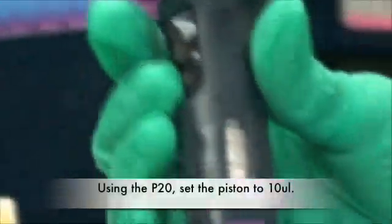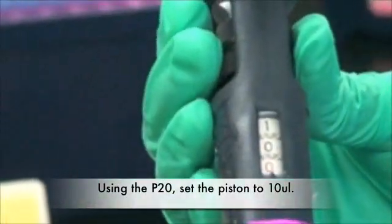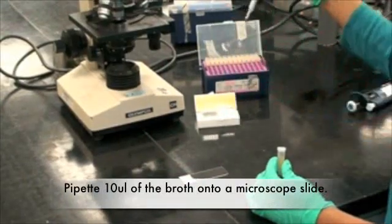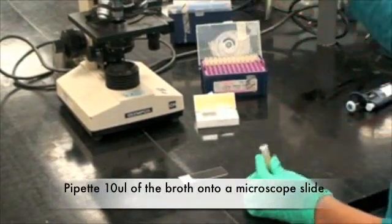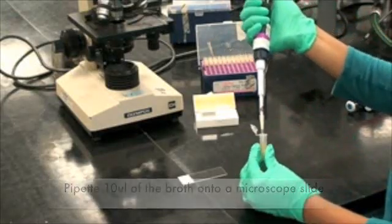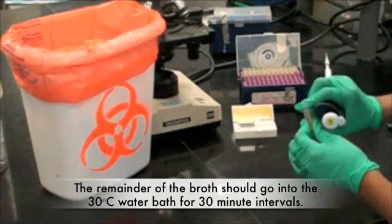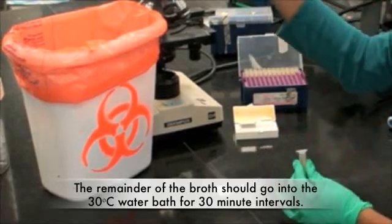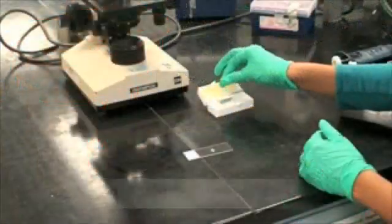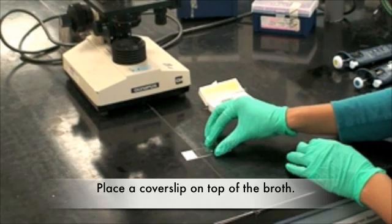Using the P20, set the piston to 10 microliters. Pipette 10 microliters of the broth onto a microscope slide. The remainder of the broth should go into the 30 degrees Celsius water bath for 30 minute intervals. Place a cover slip on top of the slide.